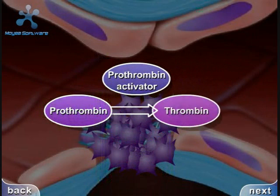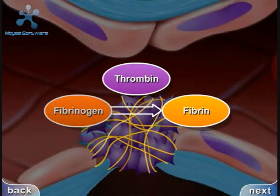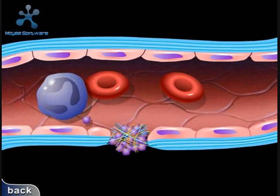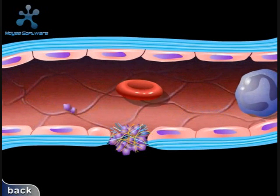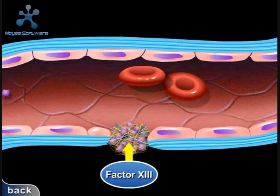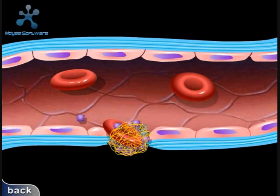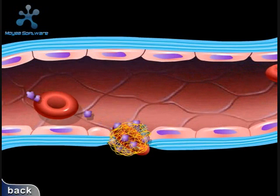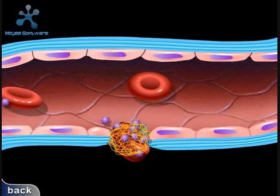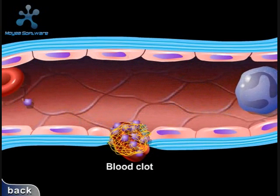Prothrombin activator converts prothrombin to thrombin. Thrombin converts fibrinogen to fibrin. Fibrin initially forms a loose mesh, but then factor 13 causes the formation of covalent crosslinks, which convert fibrin to a dense aggregation of fibers. Platelets and red blood cells become caught in this mesh of fiber, thus forming a blood clot.